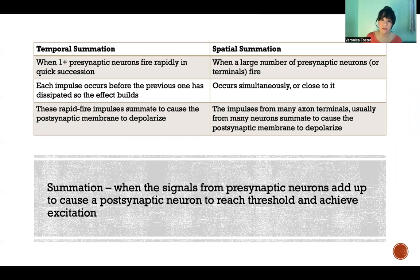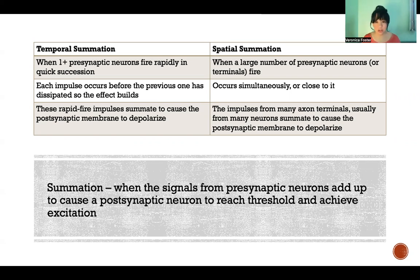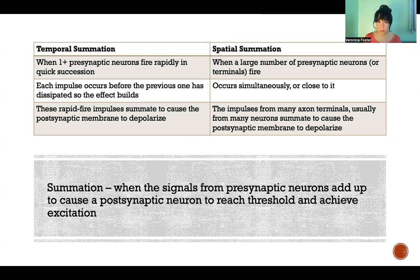— the neuron that is receiving the signal — is receiving enough of that neurotransmitter to finally reach threshold and therefore generate its own action potential in its own cell. So there are two ways that that happens: temporal summation and spatial summation.